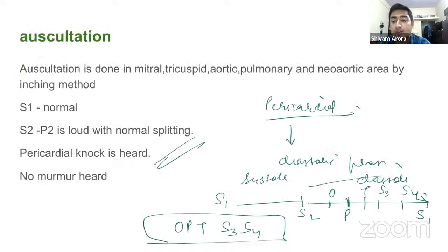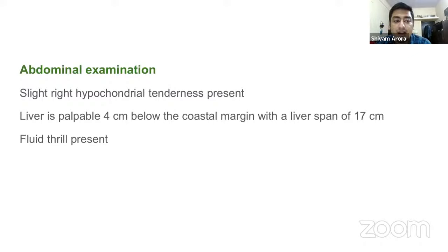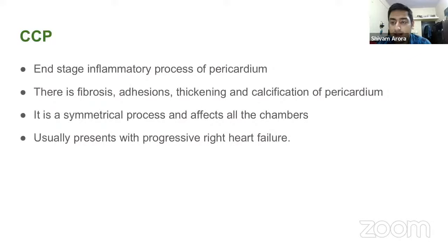The cause of pericardial knock is that during early diastolic filling, the ventricles keep on filling, but during mid or late diastole they hit the thickened pericardium, producing a sound known as the pericardial knock. On abdominal examination, there is slight right hypochondrial tenderness and the liver is palpable 4 cm below the costal margin with a liver span of 17 cm, probably due to right heart failure. This completes the case presentation.